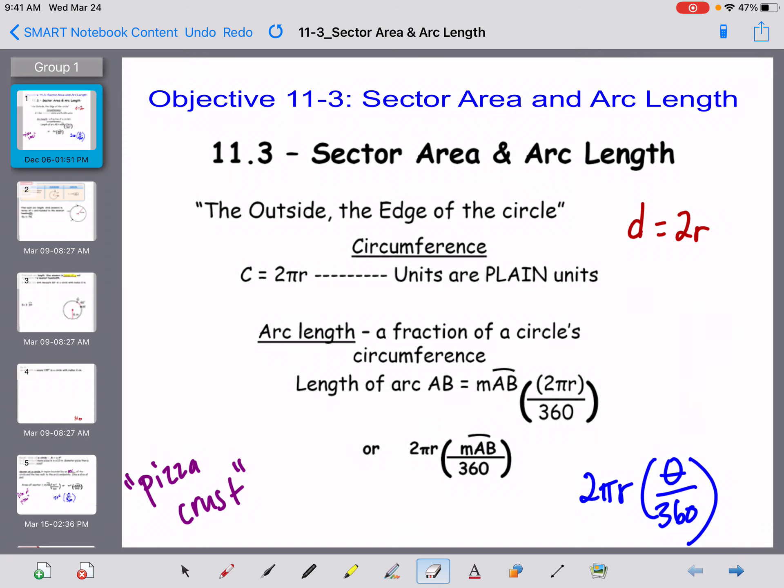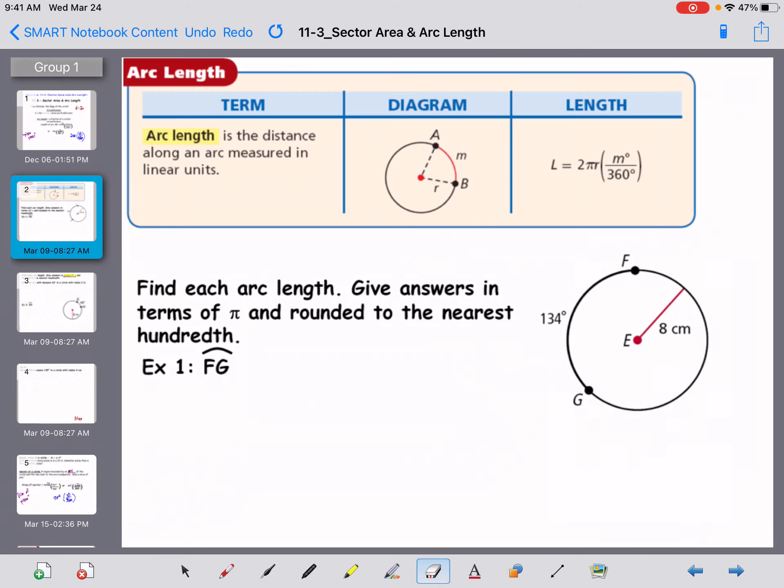And the formula that we're going to use for arc length is 2 pi r, and then we're going to have our angle divided by 360. And that should make sense because here's the whole circle, it's 360 degrees. And if we're looking at just this piece right here, well, that piece is going to be associated with that angle. So we're just looking at that small piece to figure out the arc length.